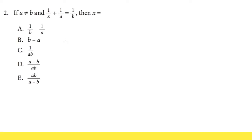For the second question, it says if a is not equal to b, and we have the equation 1 over x plus 1 over a is equal to 1 over b, then x is equal to what?